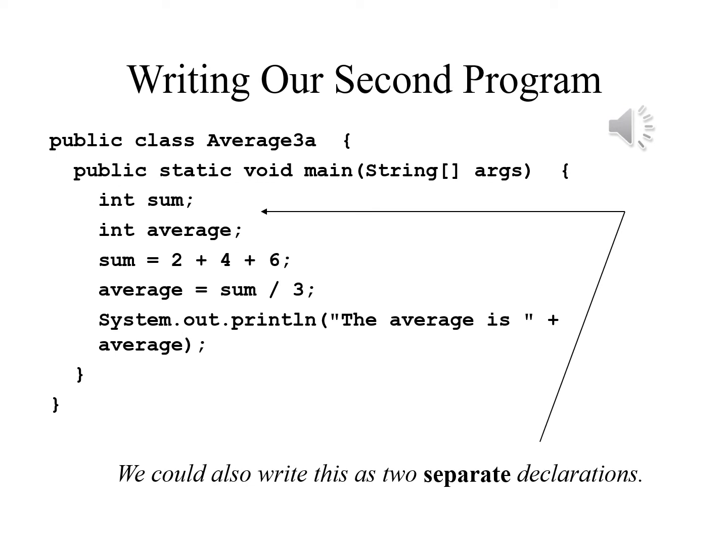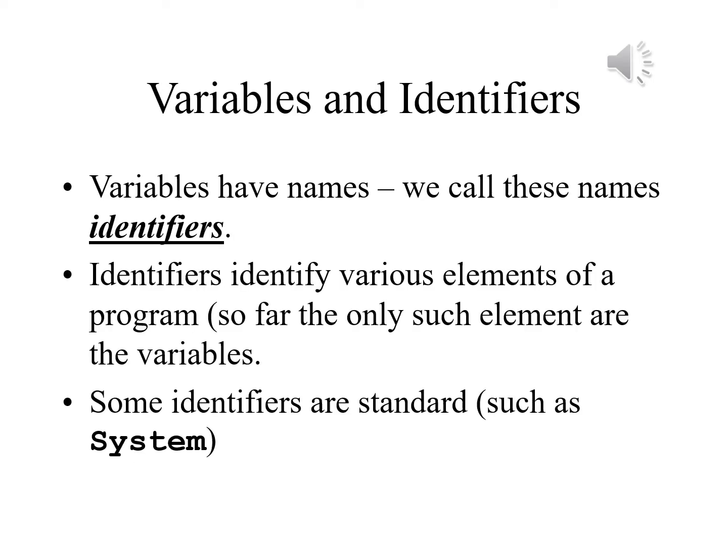This is an alternate version of that second program — since every program's name must match the name of its file, I'll call this one Average3a. The one difference is that I have declared sum and average in two separate declarations. That's perfectly legal either way. Sometimes you'll want to group variables in one declaration to show commonality; other times you'll separate them to indicate there's no such commonality. A variable is a value stored at some location in computer memory, called a variable because its value is allowed to vary or change as necessary.